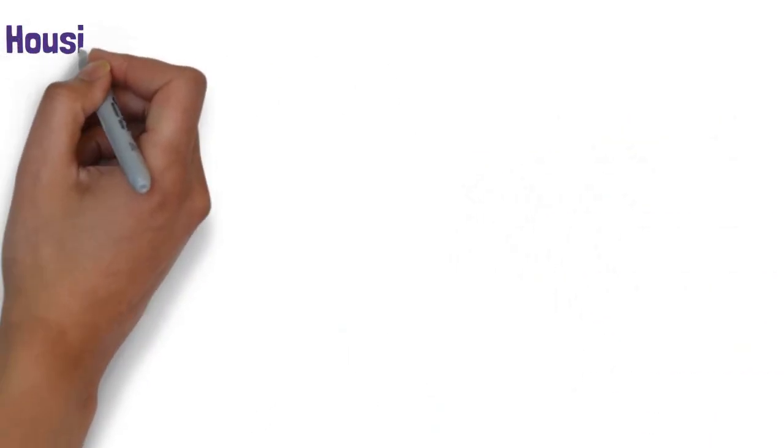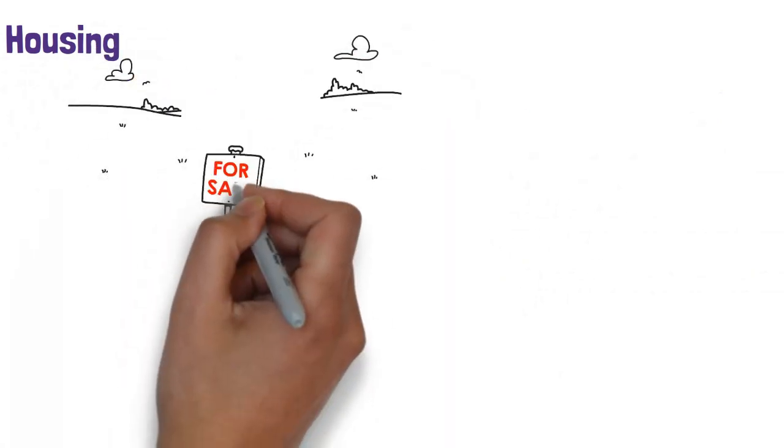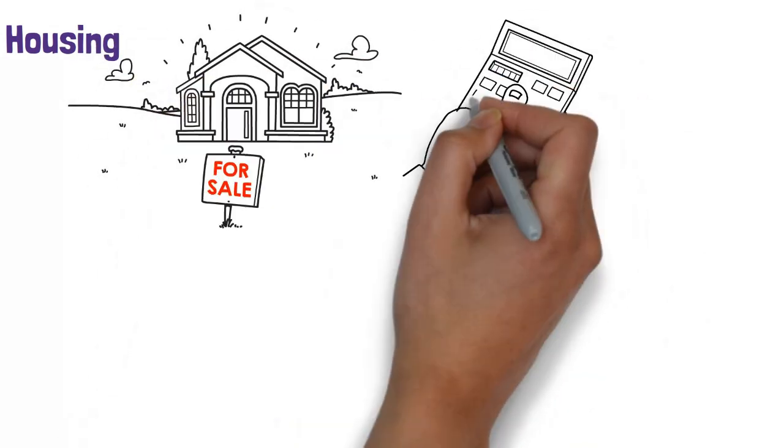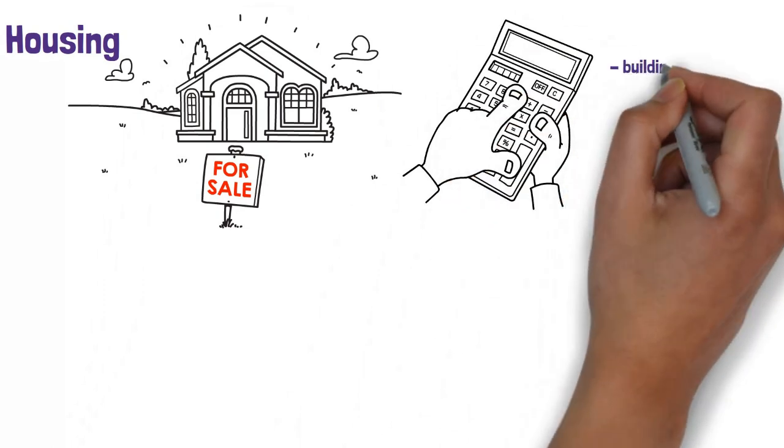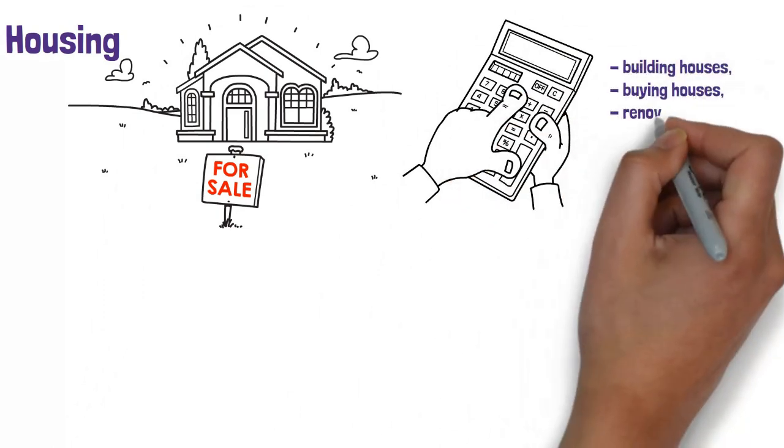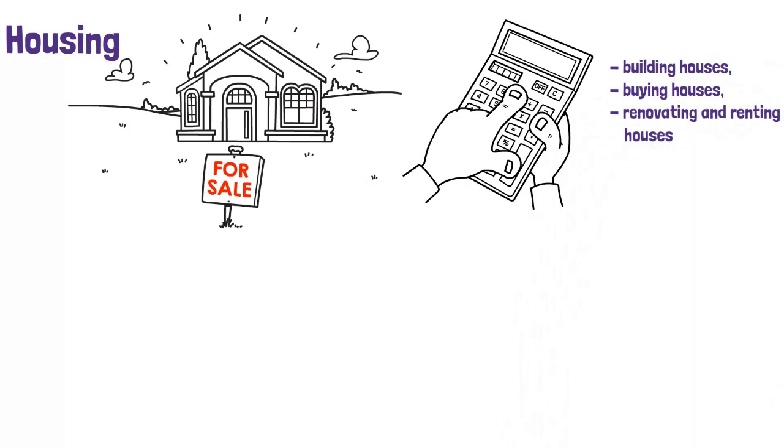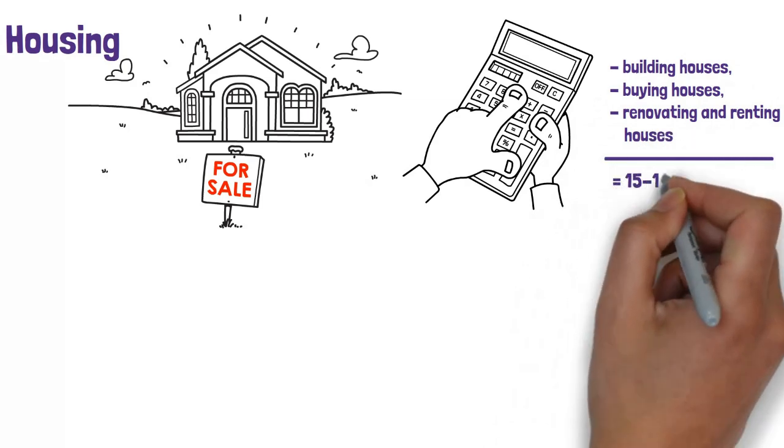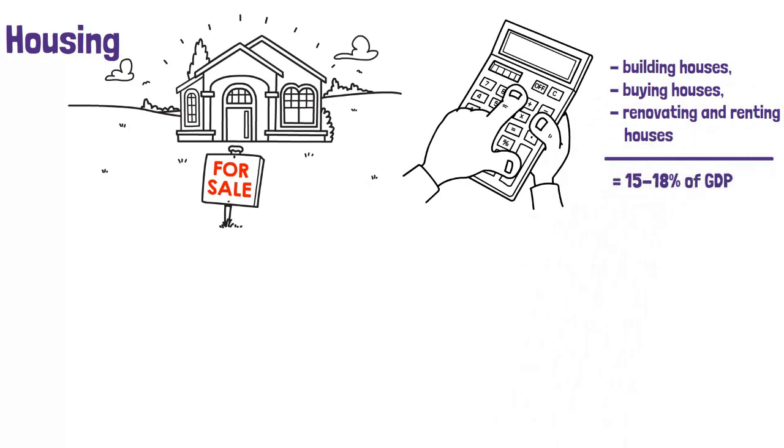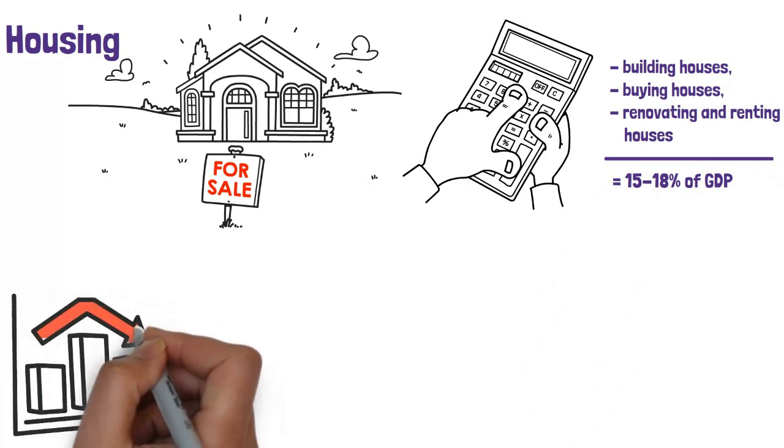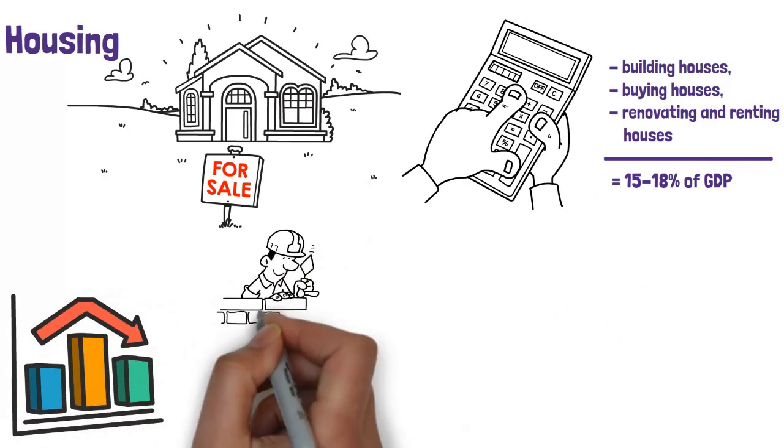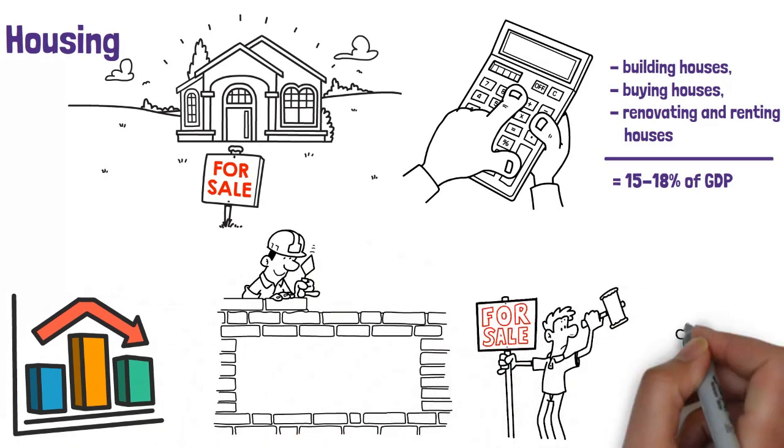Finally, there's housing. The housing market is one of the major drivers of the US economy. If you add up all the money Americans spend on building houses, buying houses, renovating, and renting houses, it adds up to 15 to 18% of gross domestic product. That's why two of the clearest indicators of a pending recession are sharp drops in both new housing construction and home sales.